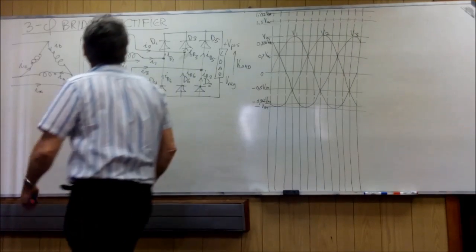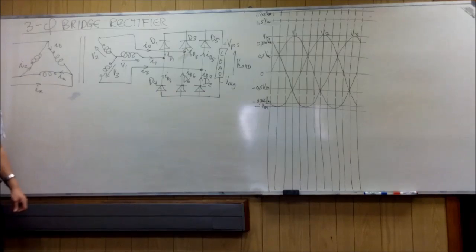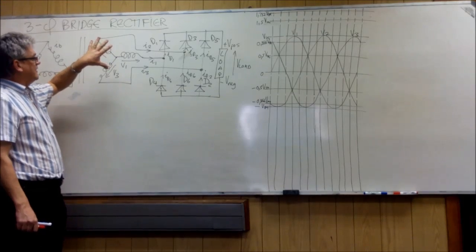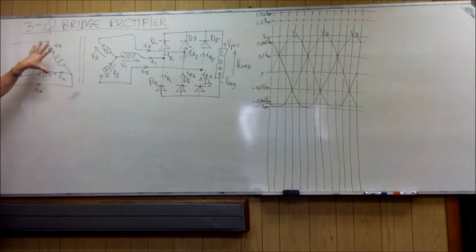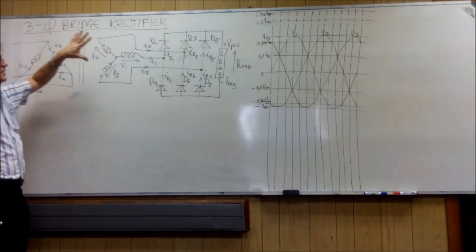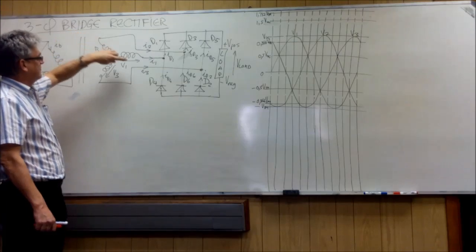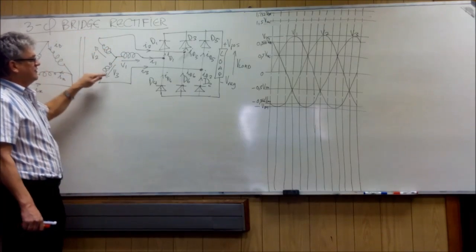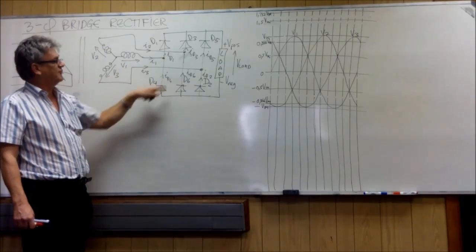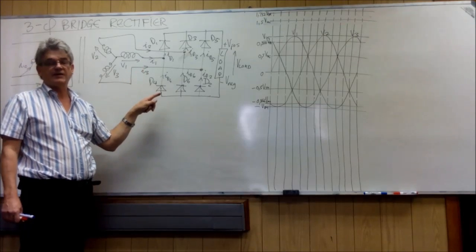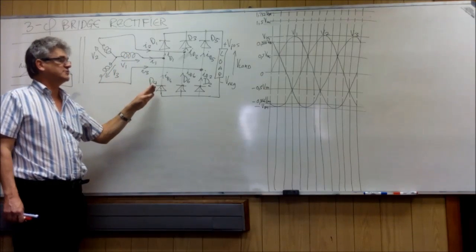3 Phase Bridge Rectifier. We have a delta primary and a star secondary. Each one of these phases, the v1, v2 and v3, feeds into a half bridge that consists of two diodes.